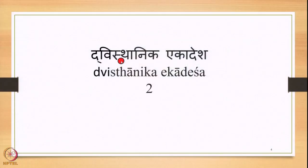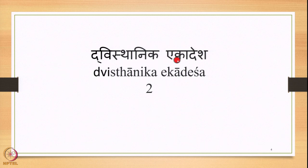We also studied some additional statements making the treatment exhaustive. Amongst the multiple rules we cannot study all, but we tried to study the majority of cases. Then we moved towards Dvishthanika Ekadesha — the second broad classification within Acha Sandhi. Dvi is two, Sthanika meaning having two Sthanis, so two Substituents, and Ekadesha means one Substitute.